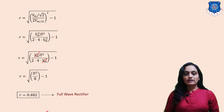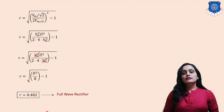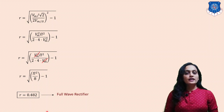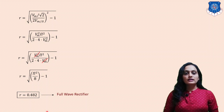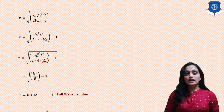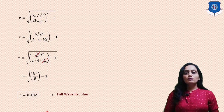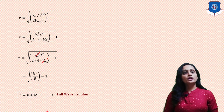The ripple factor of 0.482 for the full wave rectifier is very much less than that of the half wave rectifier, indicating that the AC component present in the full wave rectified output is much less. That's why the full wave rectifier is preferred. In percentage form, the ripple factor is 48.2%.